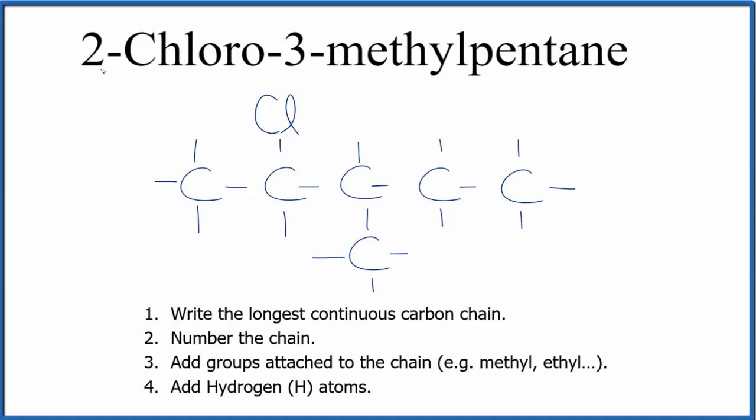So, this is the structure for 2-chloro-3-methylpentane. We have our pentane, five carbons. On the second carbon, we have the chloro, the chlorine. On the third carbon, right here, we have that methyl group.